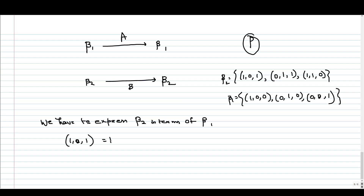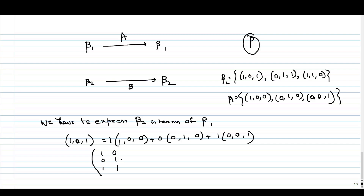To express (1,0,1) in terms of the standard basis: it is 1·(1,0,0) + 0·(0,1,0) + 1·(0,0,1). Similarly for the other two vectors. The matrix P is obtained by taking the vectors of beta2 as its columns. This matrix is called the change of basis matrix, denoted P.